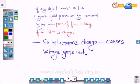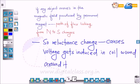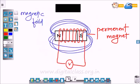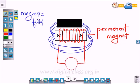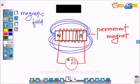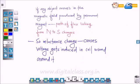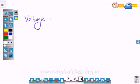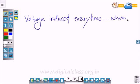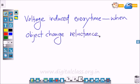This causes voltage to be induced in the coil wound around the permanent magnet. This is the self-inductance principle. You can see in the voltmeter that when the object moves in the field, the pointer deflects. There is a change in voltage. Voltage is induced every time when the object changes reluctance.